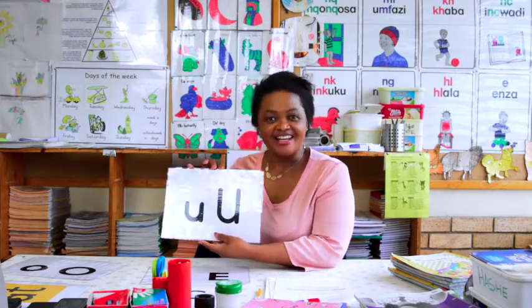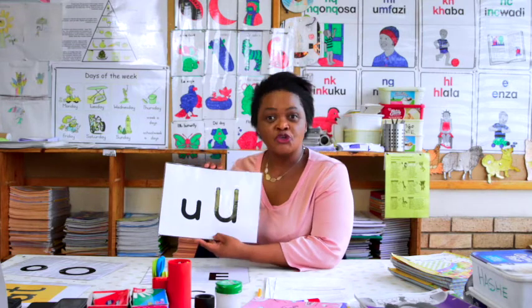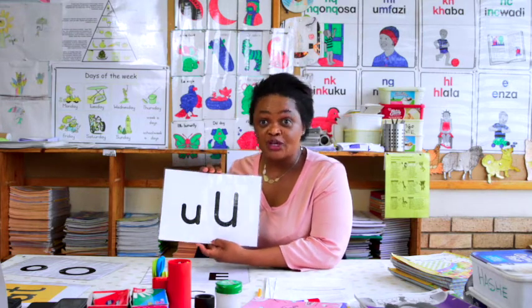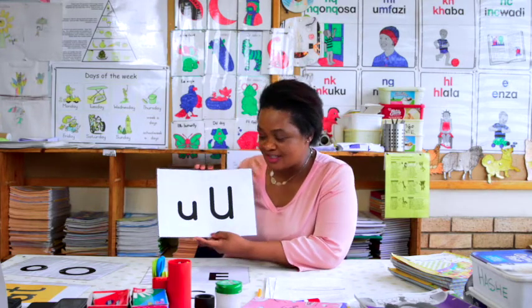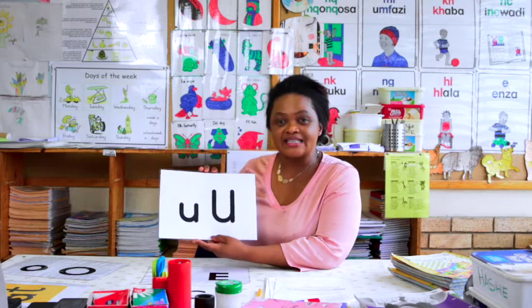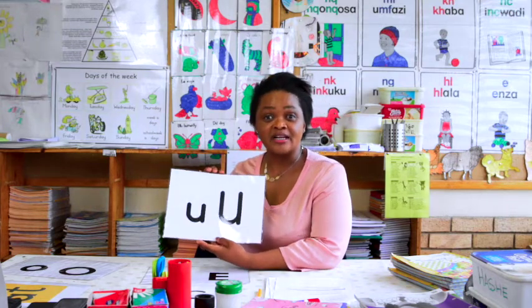The name of this letter is U. The sound of this letter is U for umbrella.